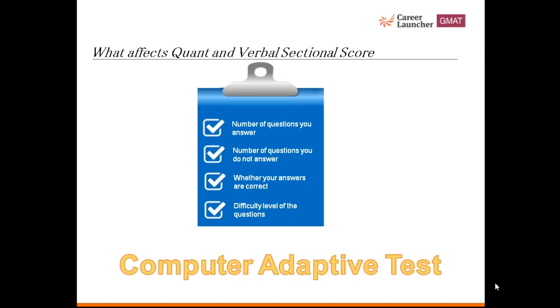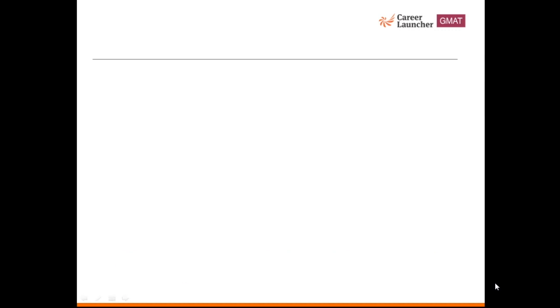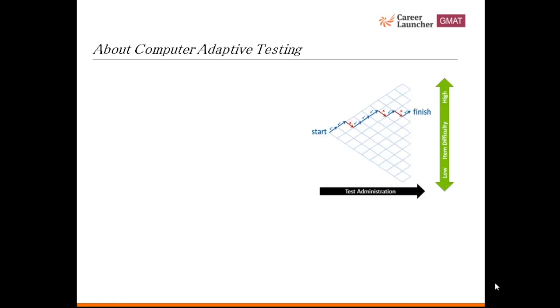GMAT is constantly assessing your ability level. The quant and verbal sections which are computer adaptive sections start with a question of medium difficulty level. Then as you go along, the test computer gives you harder or easier questions based on your ability that it has gauged. If your answer is correct you can expect the next question to be harder, and if your answer is incorrect you can expect the next question to be easier.